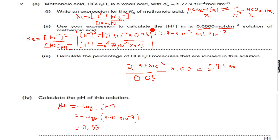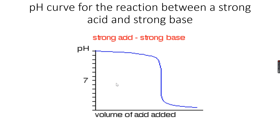We know how to find the concentration of H+ ions and write expressions for Ka — we have done this part of acid-base equilibria. Now let's do pH curves. A pH curve shows what happens to the pH during a titration.